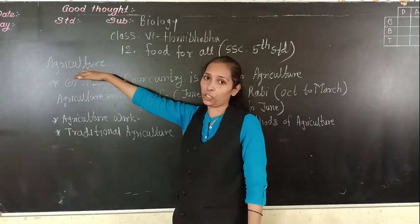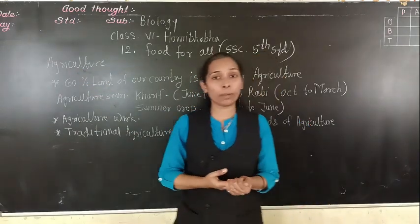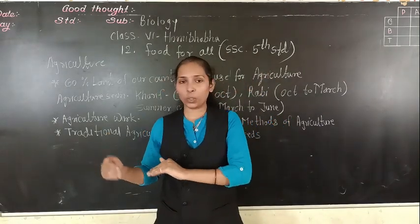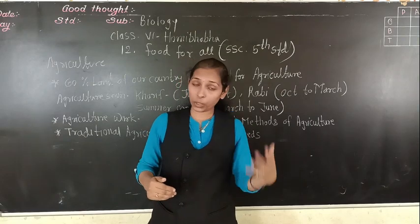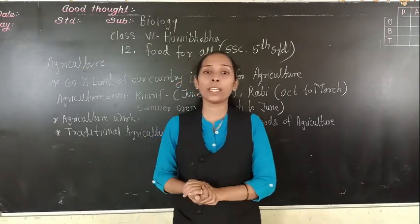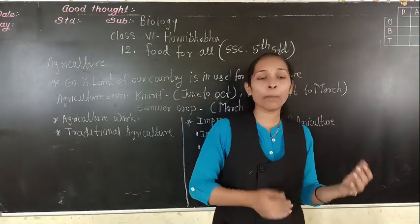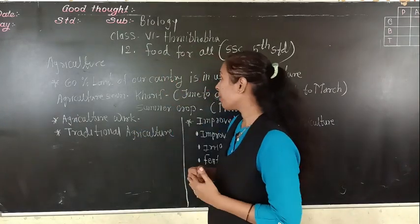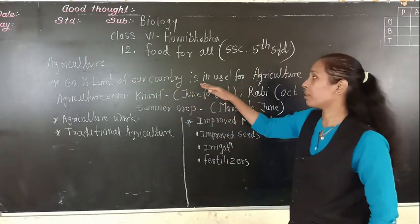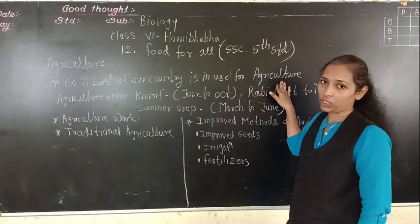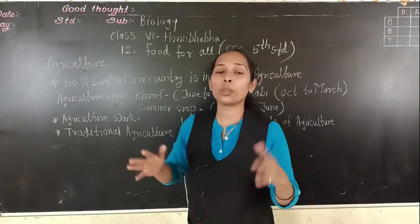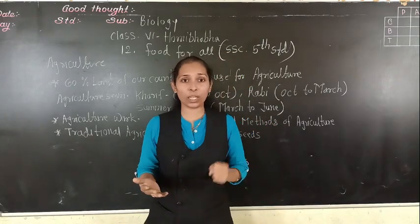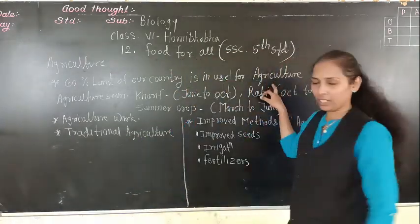What is meant by agriculture? As we know, India is an agriculture-based country. Most people's occupation is agriculture. Even if we are doing other jobs, we still depend on agriculture directly or indirectly. Because of agriculture we are getting enough food every day. About 60% of the land of our country is used for agriculture. So what is meant by agriculture? The mass production of crops for the purpose of eating and for other purposes — that production is called agriculture.